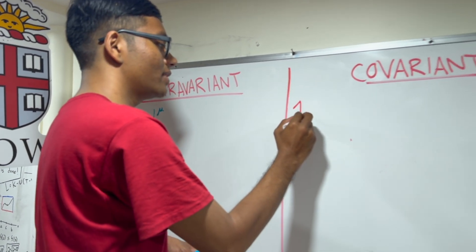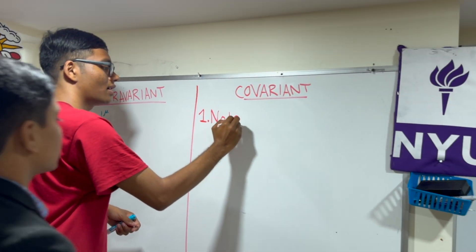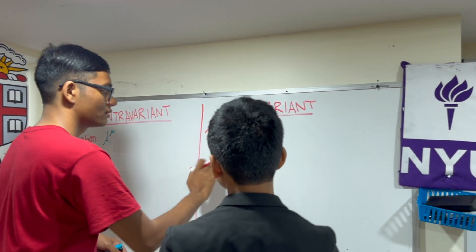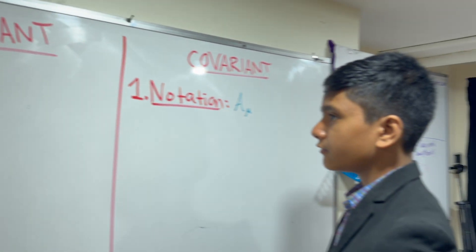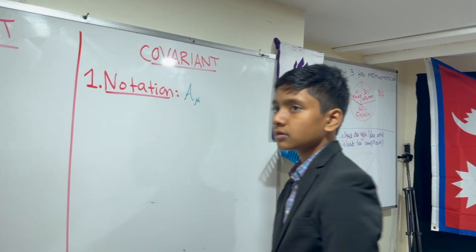Can you tell me the notation for a covariant? When we have a covariant vector, we just use a subscript. Very good.